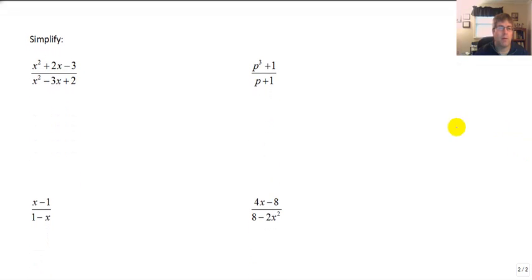So let's take a look at some sample problems. We want to simplify x squared plus 2x minus 3 over x squared minus 3x plus 2. Now, x squared over x squared, we cannot cancel that. These are terms. I have three terms that make up this trinomial. We may not cancel x squared over x squared.